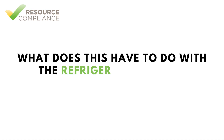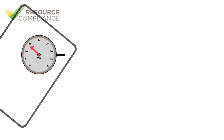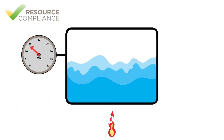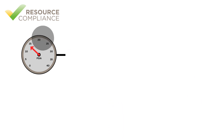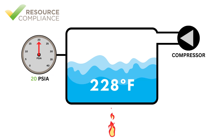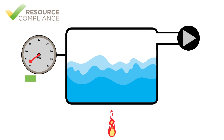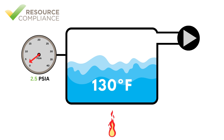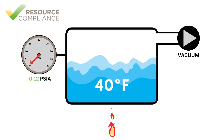What does this have to do with the refrigeration vapor compression cycle? If we go back to our original container of water and seal it so that the pressure in the container can be manipulated with a compressor or a vacuum pump, we can adjust the boiling point of water accordingly. Raising the pressure to 20 PSIA makes the water boil at 228 degrees Fahrenheit. Lowering the pressure to 2.5 PSIA causes the water to boil at 130 degrees Fahrenheit. Pulling a hard vacuum by reducing the pressure to 0.12 PSIA lowers the boiling point of water down to 40 degrees Fahrenheit.